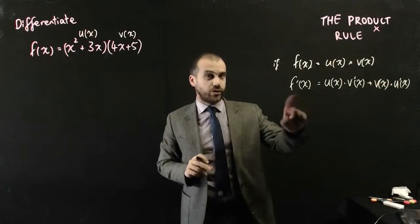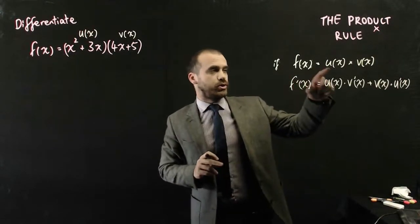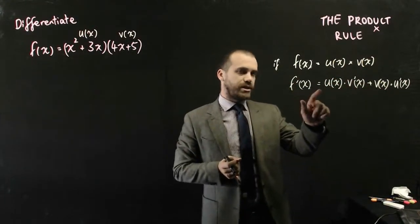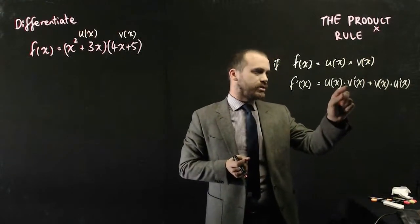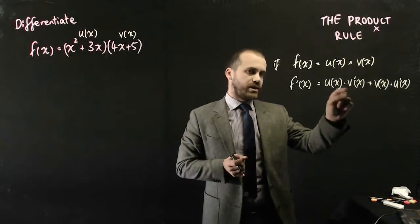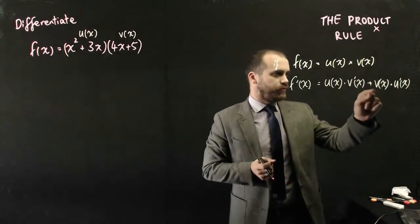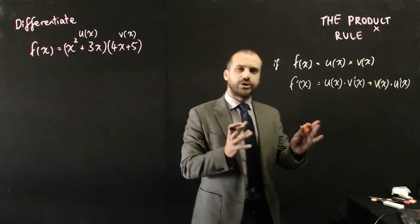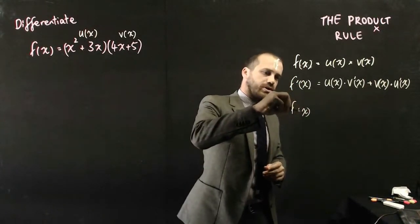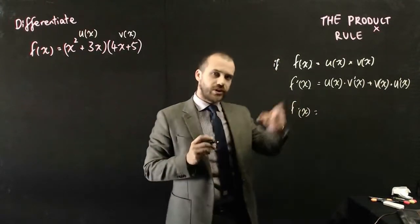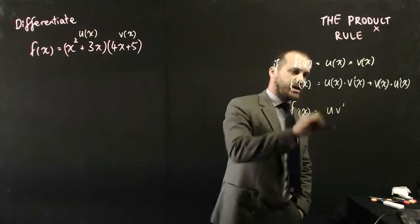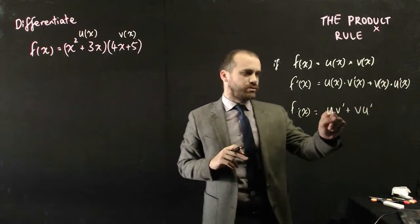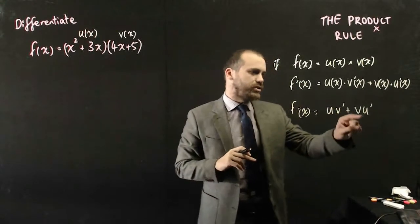So here's our formal formula here. It says if f(x) is equal to u(x) times v(x), then f'(x) is going to be equal to u(x) times the derivative of v(x), v'(x), plus v(x) times the derivative of u(x). Now this is usually simplified a little bit, just to say that the derivative is equal to uv' + vu'. So u times the derivative of v plus v times the derivative of u.